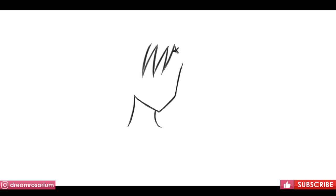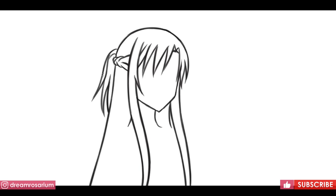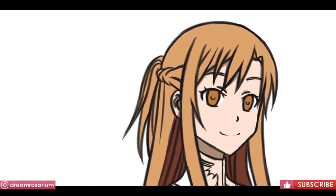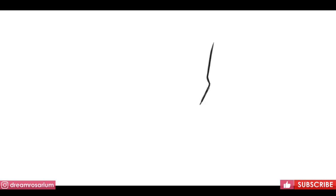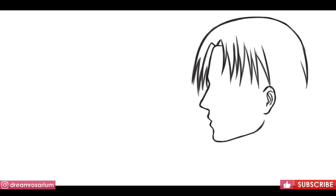Asuna Yuki from Sword Art Online has a unique hairstyle. She has somewhat side-swept bangs and a braided half-up half-down hairstyle. Levi Ackerman from Attack on Titan is an example as well, and he wears an undercut.